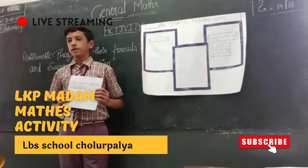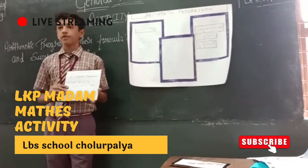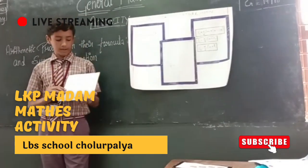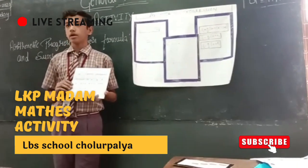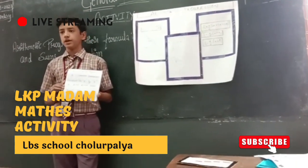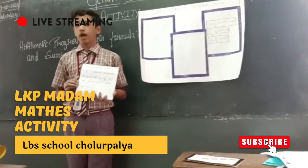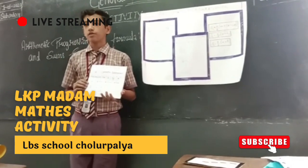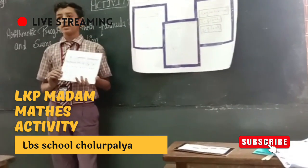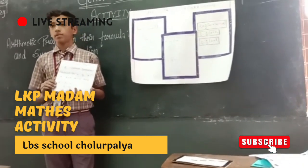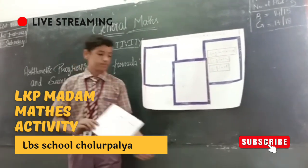In the AP, A is the first term and the common difference is D. The general form is: A, A plus D, A plus 2D, A plus 3D, A plus 4D, and so on. The formula for D is: A2 minus A1, A3 minus A2, A4 minus A3, and so on.